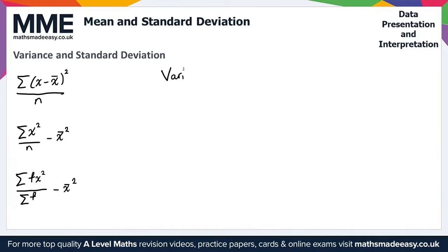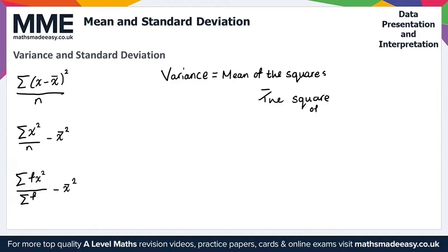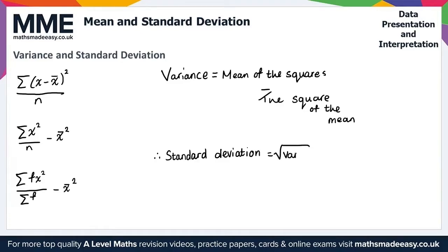It's easiest to remember a simple rule: the variance is the mean of the squares minus the square of the mean. The standard deviation is simply the square root of the variance. So the square root of the variance gives us the standard deviation. That's everything we need for variance and standard deviation.